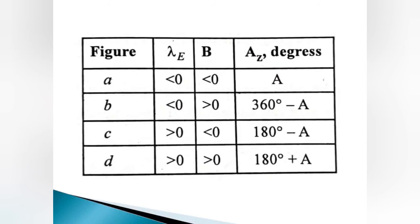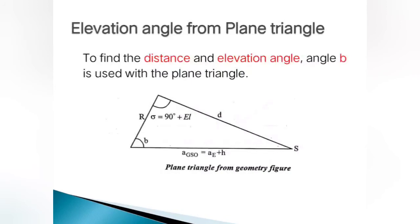According to figure (a), when lambda-e is less than 0 and b is less than 0, azimuth angle Az equals capital A. According to figure (b), when lambda-e is less than 0 and b is greater than 0, Az equals 360 degrees minus A. According to figure (c), when lambda-e is greater than 0 and b is less than 0, Az equals 180 degrees minus A. According to figure (d), when lambda-e is greater than 0 and b is greater than 0, Az equals 180 degrees plus A.